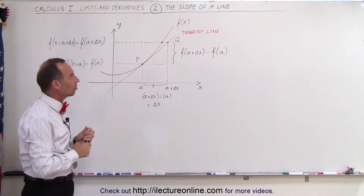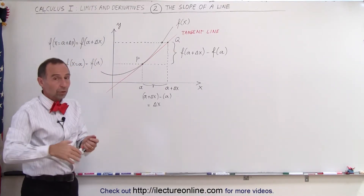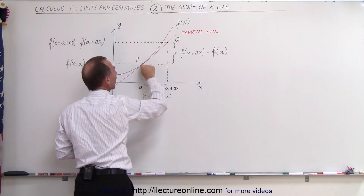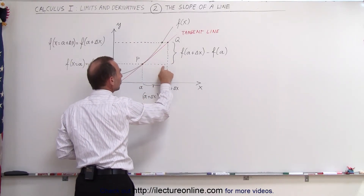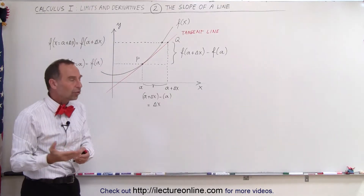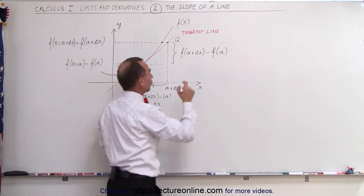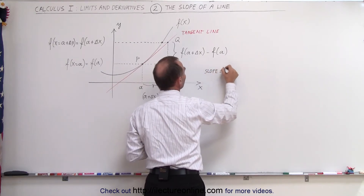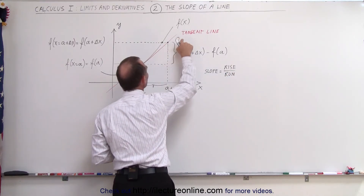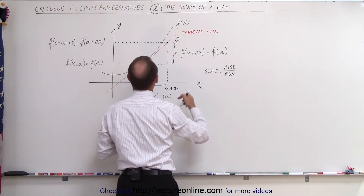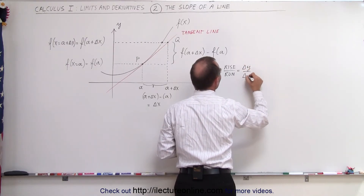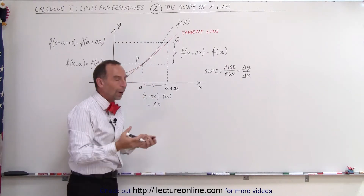Now, what about the slope of that tangent line? How do we find the slope? As you have learned in algebra, the slope can be found by taking the ratio of the rise over the run. So we take two points on the line, find the change in the horizontal direction — which is the run — and the change in the vertical direction — which is the rise — and the slope is the ratio of rise over run. Going from point P to point Q, the rise is the difference of those two y locations. That's another way of writing the rise and the run: how much does y change divided by how much does x change.